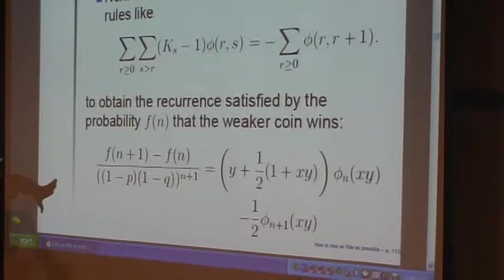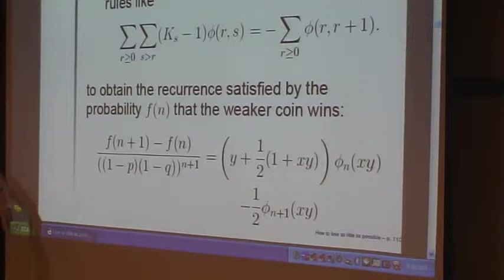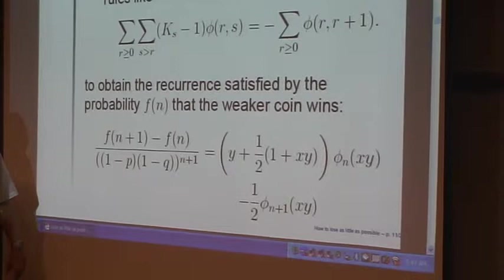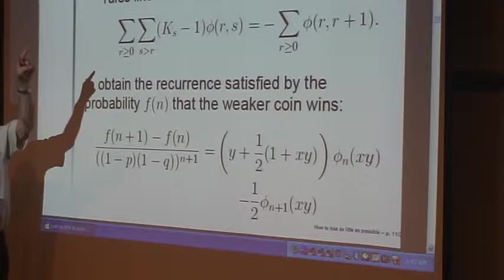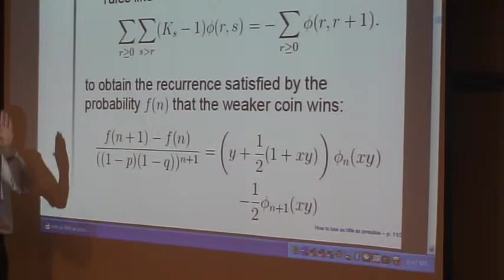But the really nice feature of this that really surprised me was that the recurrence involves f(n+1) - f(n). And so whatever that stuff is on the right-hand side, if it's positive the function f is still increasing, and if it's negative the function f is going down. So we're going to learn something about the peak that that function has by looking at whatever that right side is. That was the good news. Now let me show you what the right side is.